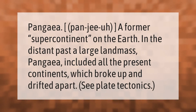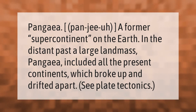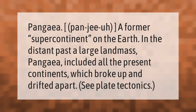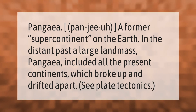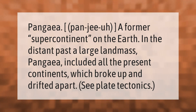Pangaea was a former supercontinent on the Earth in the distant past. This large landmass included all the present continents, which eventually broke up and drifted apart — see plate tectonics.